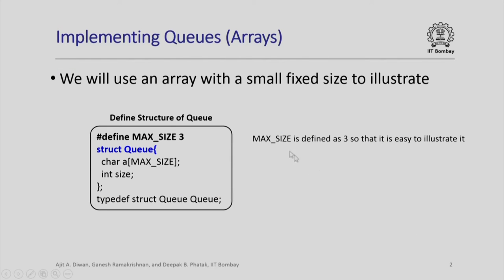In order to implement queues we will use an array with fixed size to illustrate the formation of the queue, insertion and removal of the elements. The definition is very simple: we define an array char a with MAX_SIZE as 3 just for the purpose of illustration and we have a variable called size.